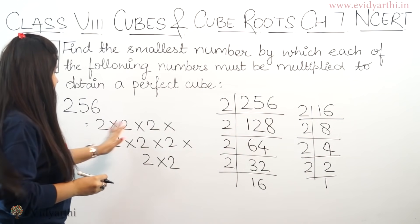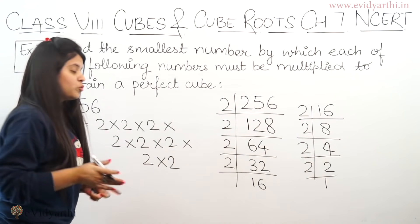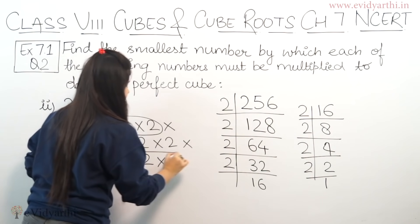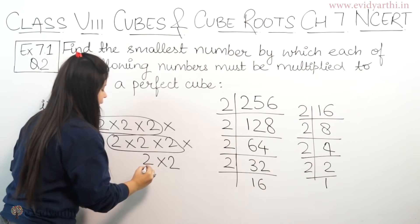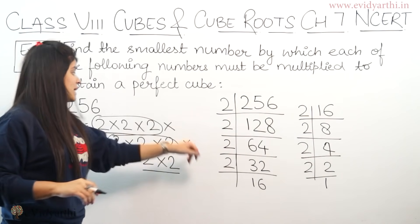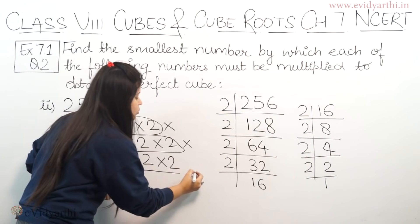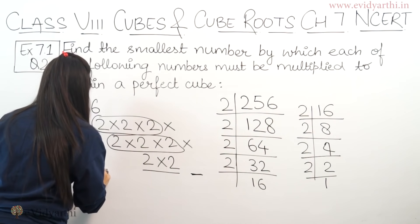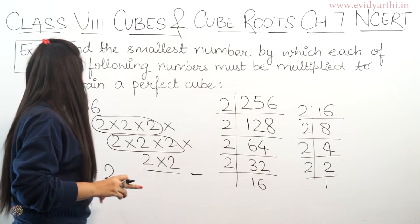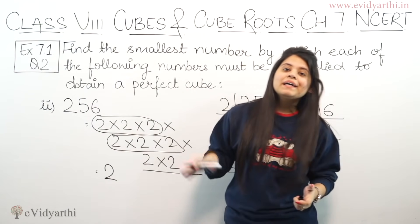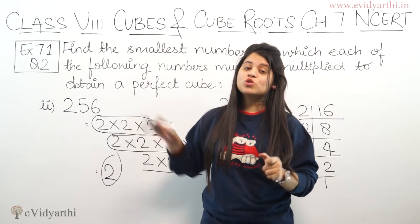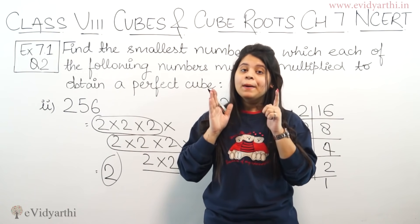Now let's form groups of three. The first triplet is one group of three 2s. The second triplet is another group of three 2s. But this time 2 appears only twice in the remaining. If one more 2 were there, it would form a triplet and the number would be a perfect cube. So the missing number is 2. If we multiply 256 by 2, it will form a perfect cube.